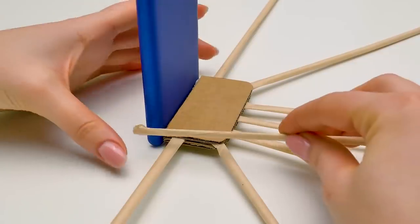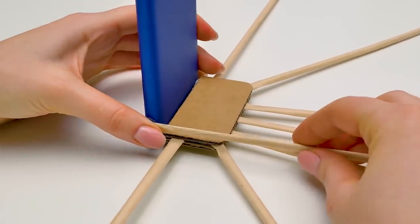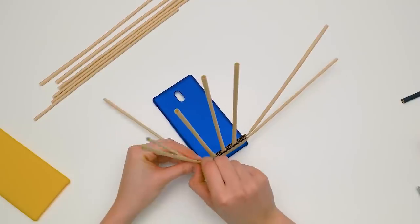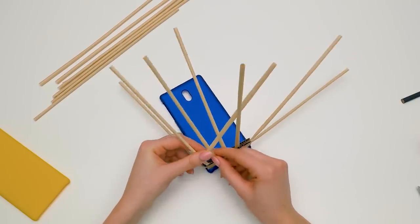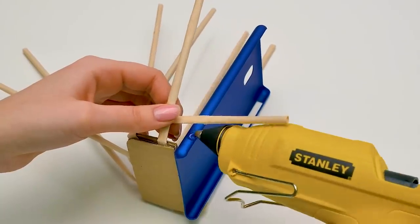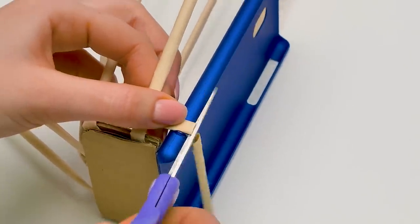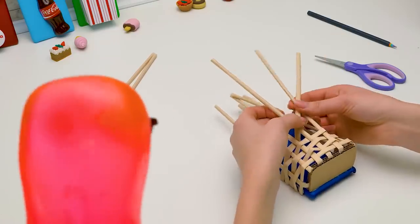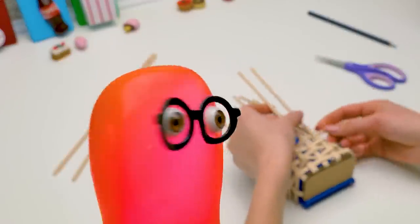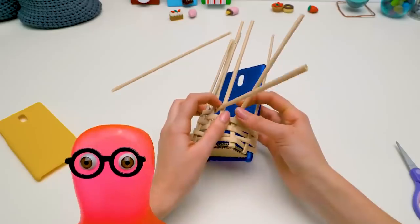Then we need to glue a paper stick at the side. And now we can start weaving our little basket. Nice and slow. Make sure not to crumple the sticks. Then glue the sticks on the other side. And cut away the excess. Hey Sam, would you like to help me? Uh, is that a serious question?